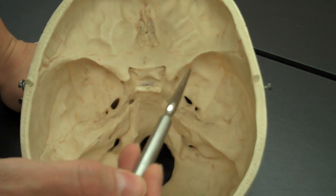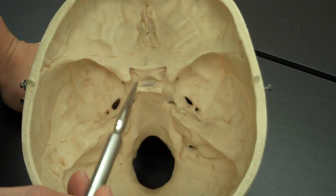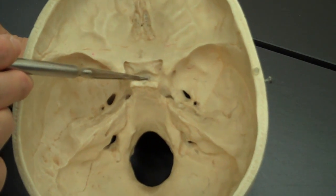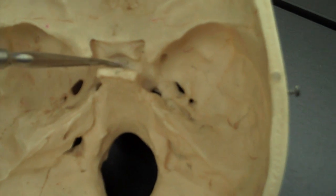In the sphenoid bone, again this bat or butterfly shape, there's this very special portion right here. You can see my pointer is going down in there. This is called the sella turcica. Roughly translates to Turkish saddle.